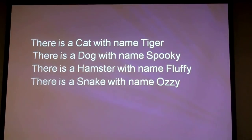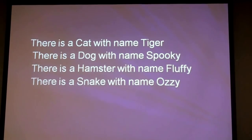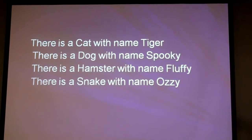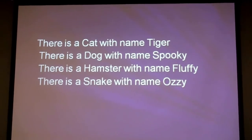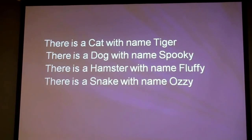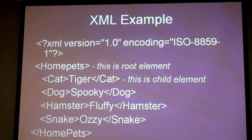Imagine describing your home pets to a friend: there is a cat named Tiger, a dog named Spooky, and so on. That's essentially data — information you're transferring. If you put this same information into XML format, the first line is the XML declaration, and then you have elements like cat, dog, hamster, and snake with their names. The information is perfectly preserved in a different format — nothing is lost.